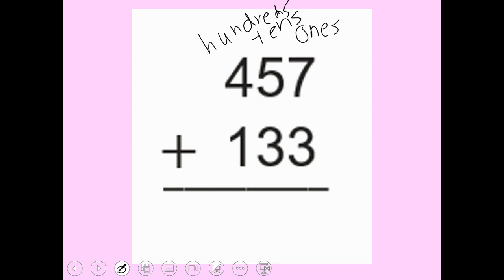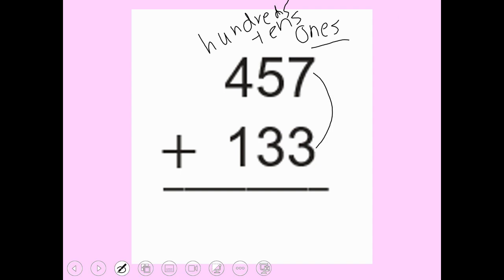We always start with our ones place. I'm going to add seven plus three. Seven plus three makes ten, but I can't put ten there because I can only put one digit in this place value. So I'm going to put my zero here and put my one at the top.